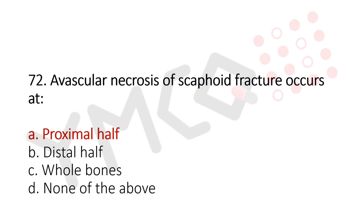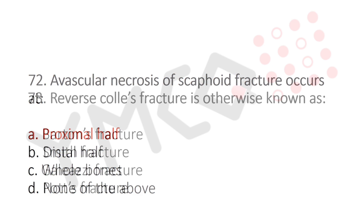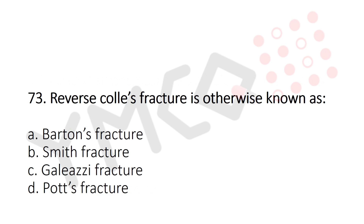Question 73: Reverse Colles' fracture is otherwise known as — Option A: Barton fracture, Option B: Smith fracture, Option C: Greenstick fracture, Option D: Pott's fracture. The answer is Option B, Smith fracture.